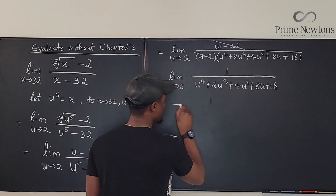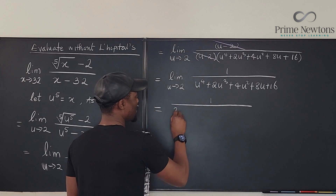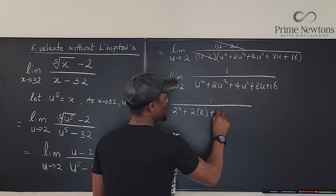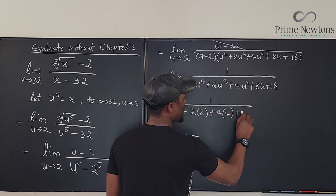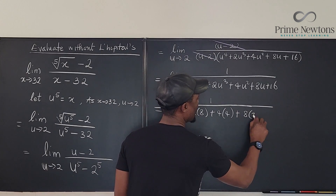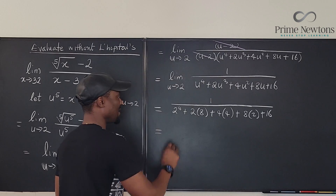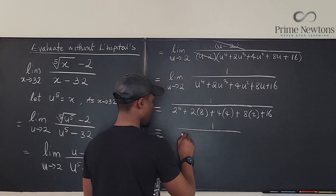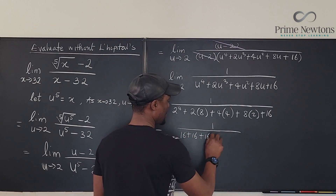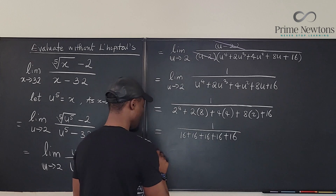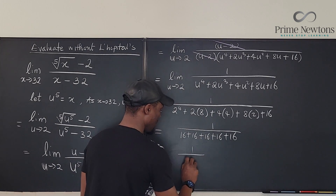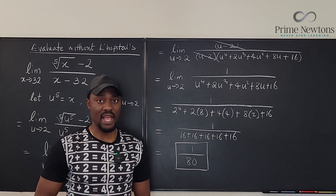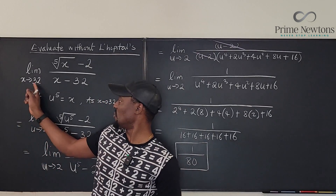Now we have 1 over: u to the fourth is 2 to the fourth which is 16, plus 2 times 8 which is 16, plus 4 times 4 which is 16, plus 8 times 2 which is 16, plus 16. You'll notice every single term is 16, so this is 1 over 16 plus 16 plus 16 plus 16 plus 16, which equals 1 over 80. That is the limit. And if you check this using L'Hôpital's rule, that's what you'll get evaluating it as x approaches 32.